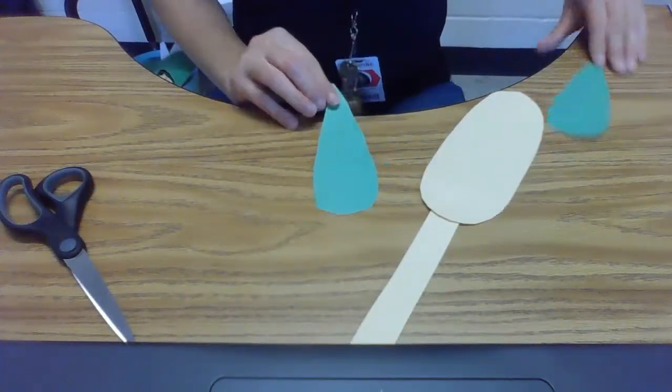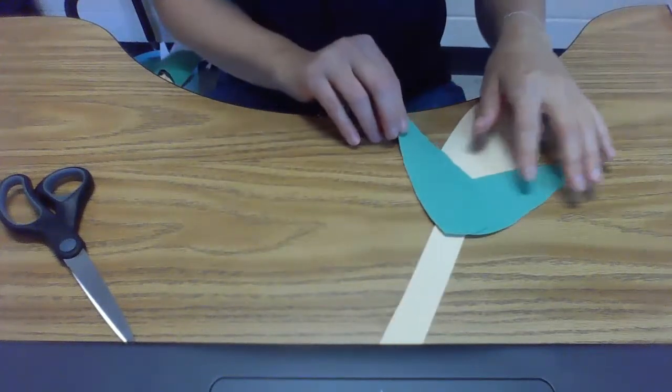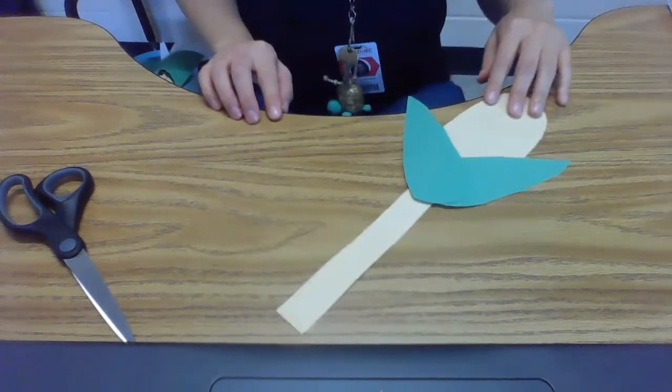Now you have your two green husks. They're kind of like teardrop shapes and we're going to glue that onto the bottom part of our corn just like this.